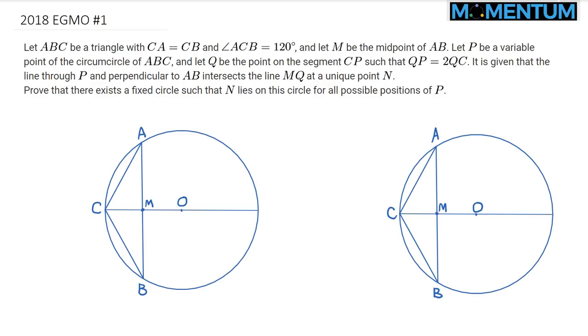Triangle ABC is an isosceles triangle where CA is congruent to CB, and angle ACB measures 120 degrees, so this central angle here is 120 degrees. Because M is the midpoint of AB and we have an isosceles triangle, that would be a 90 degree angle.